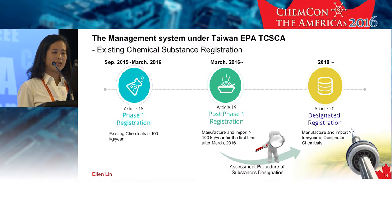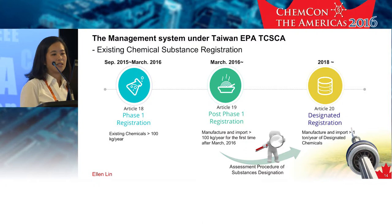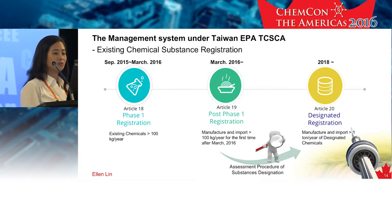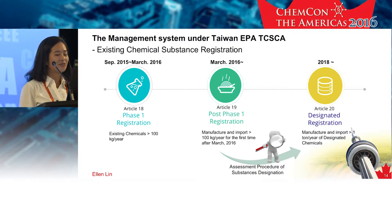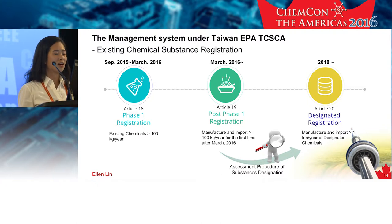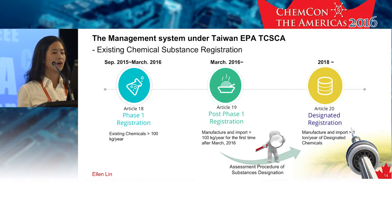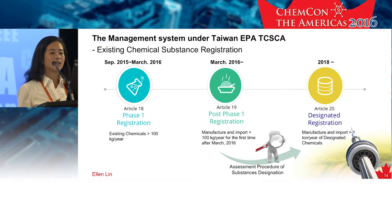It is basically a two-phase registration. Phase one is quite similar to the pre-registration under EU REACH. It is like a survey to gather information on the active substances in Taiwan, and it is going to help our EPA plan the future management and the designated chemical screening.